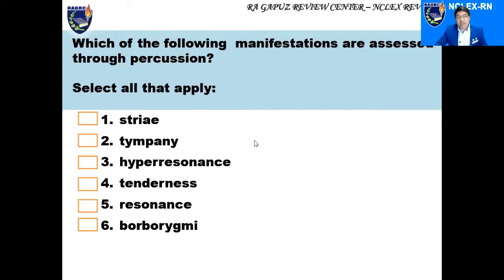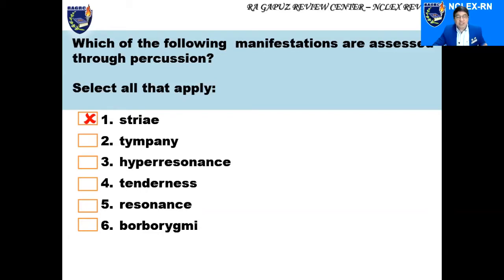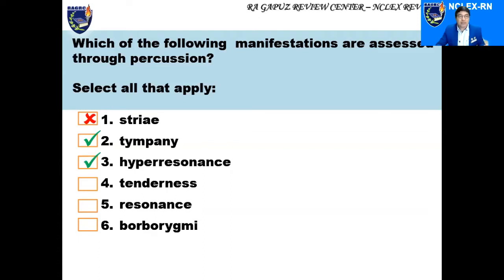First option: striae. When you say striae, these are your stretch marks, and they are observed by means of inspection — not by percussion, so we put an X. The second option is tympani, which is a high-pitched sound due to the presence of a hollow space that can trap air or gas — this can be assessed through percussion, so we put a check. Hyperresonance is a low-pitched sound due to hyperinflation of the lungs, such as in pneumothorax — also assessed through percussion. Tenderness is usually assessed by palpation, so we put an X.